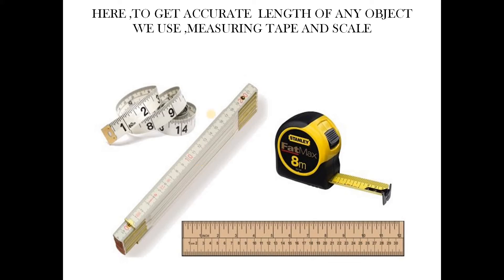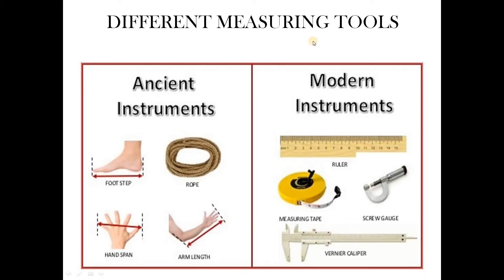To get an accurate measure of any object, we use measuring tape and scale. This is a scale and this is a measuring tape. There are different types of measuring instruments used. These are ancient instruments, used in ancient times to measure objects. And these are the modern instruments, used to get accurate measurement of objects.